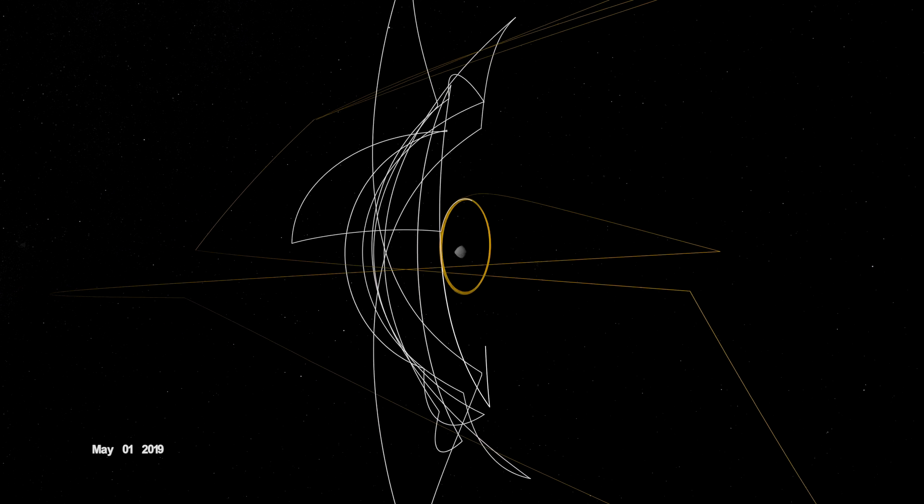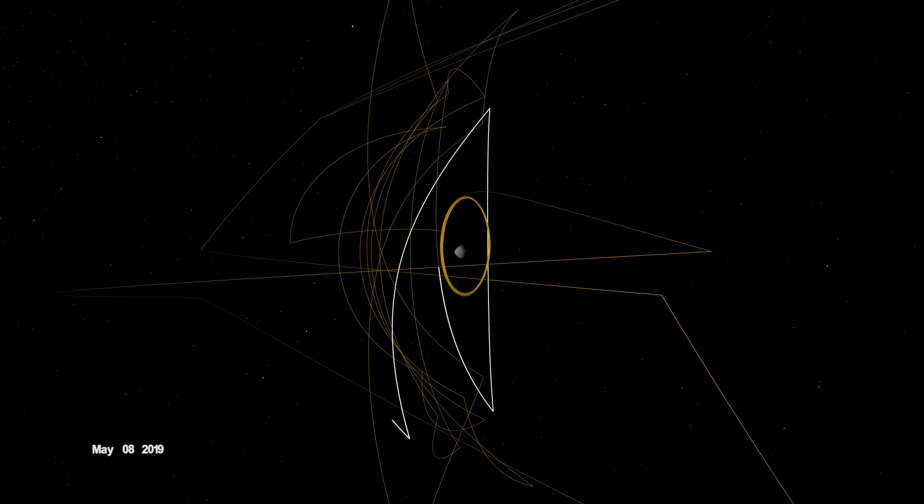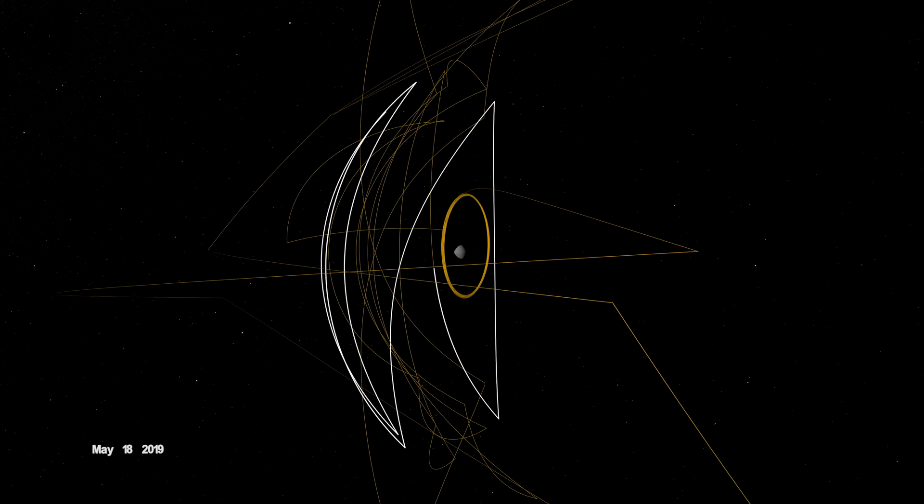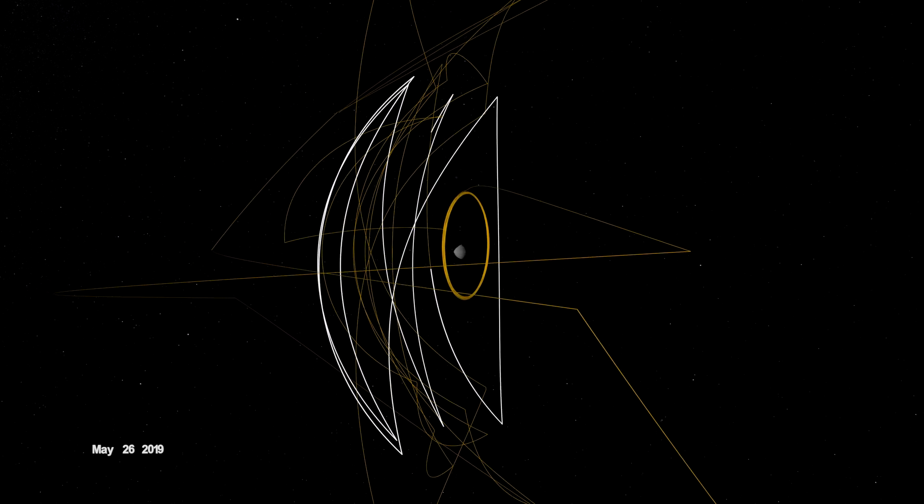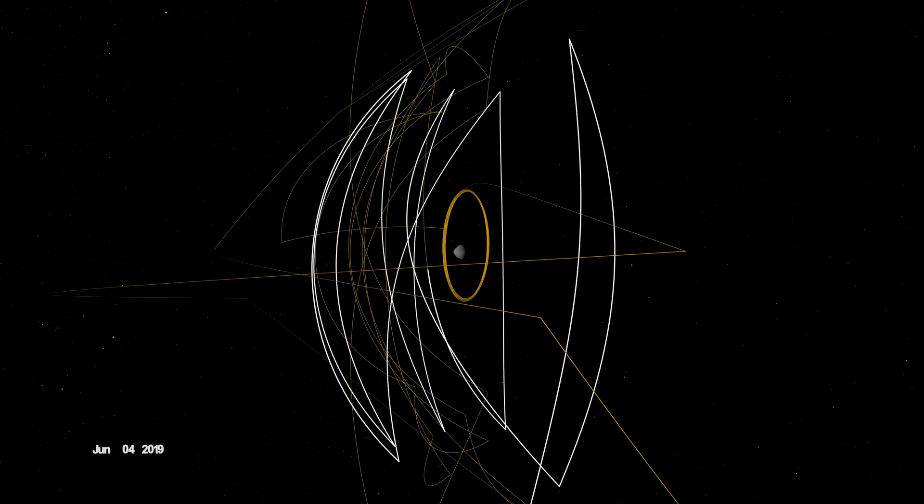During the detailed survey, OSIRIS-REx globally mapped Bennu at only 5 centimeters per pixel, the highest resolution of any planetary body, including Earth.